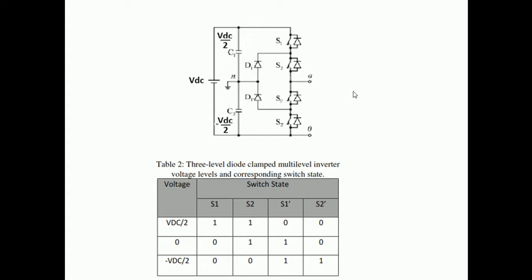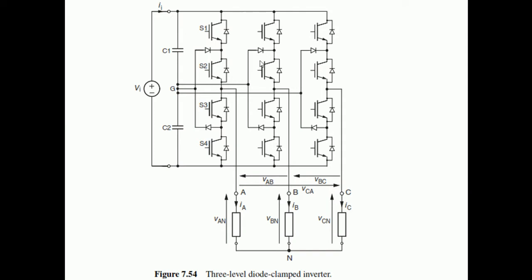This is how the diode clamp multilevel inverter works. This configuration is for the single phase. For the three-phase version, we have three legs with switches S1, S2, and their complements. By proper variation of the gate pulses, we can obtain a three-phase signal, which is how a three-phase multilevel diode clamp inverter works.